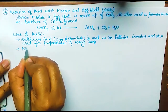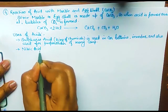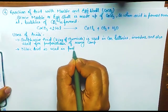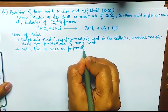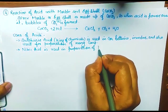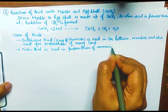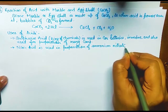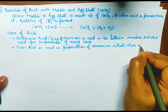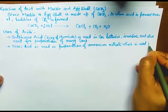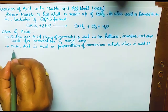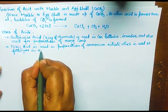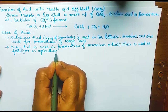Nitric acid is used in the preparation of ammonium nitrate, which is used as a fertilizer in agriculture.